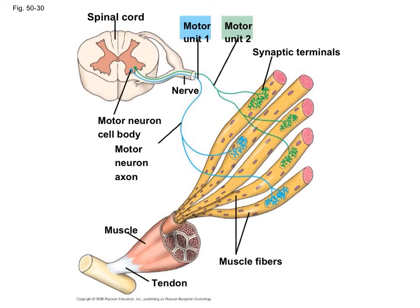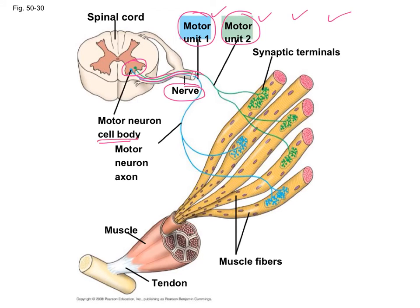Motor neurons have their cell body in the central nervous system — here in the spinal cord — and axons go out in bundles. A bundle of axons is a nerve. Each axon innervates a certain number of muscle fibers. There is something called recruitment: a strong signal activates several motor units and more muscle fibers contract; a small stimulus activates fewer motor units, producing a smaller contraction.